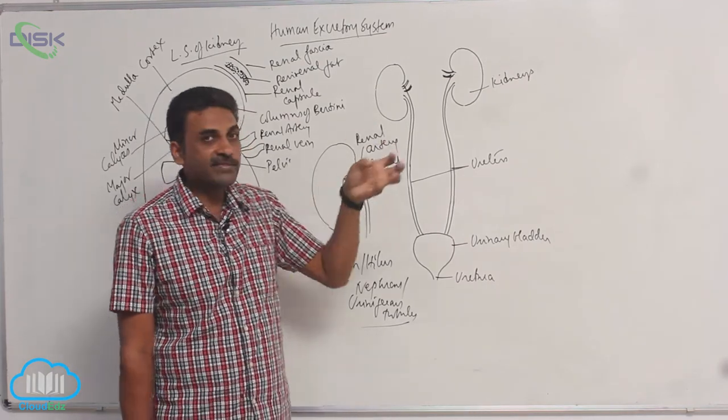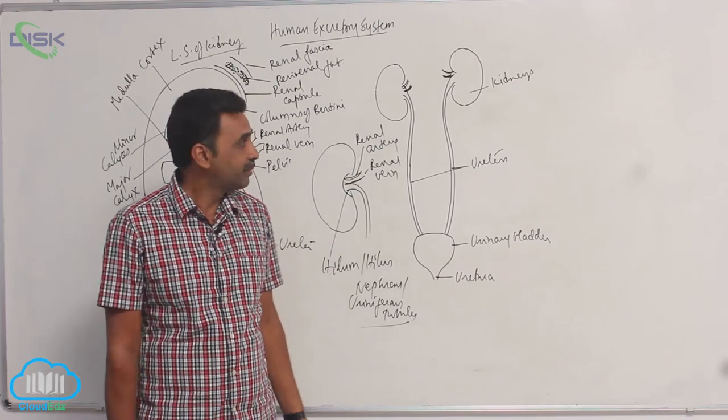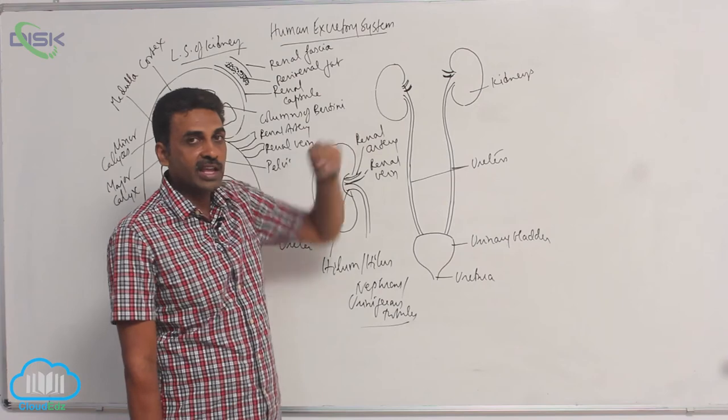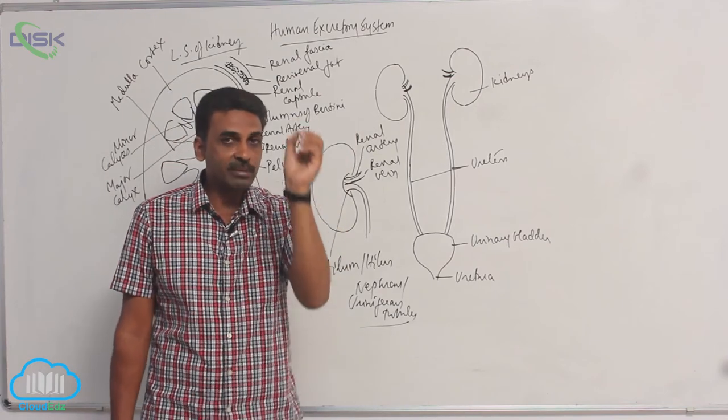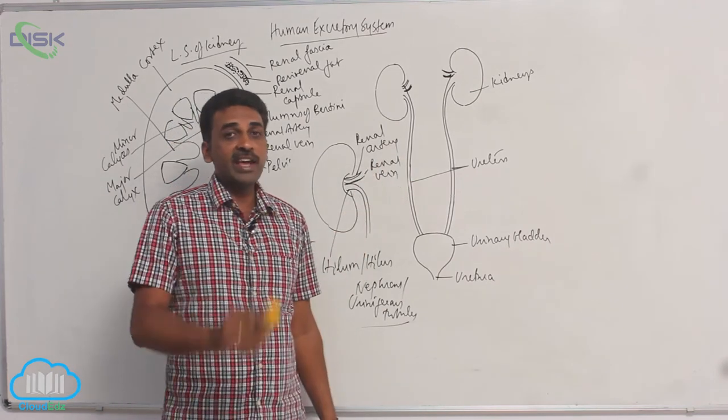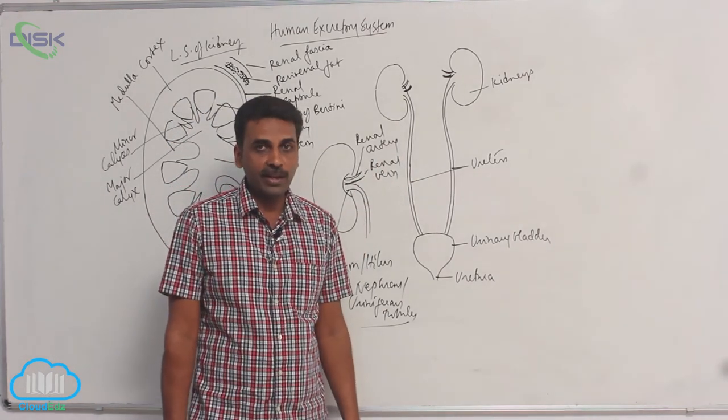So from there, ureters originate. They are thick-walled tubes. They are around 25 to 30 centimeters in length. So these tubes, internally, they are lined by transitional epithelium.